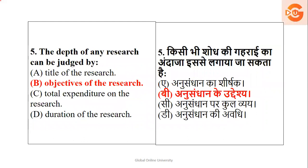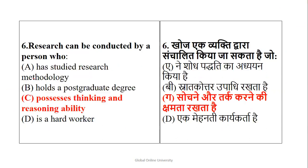Question 5: The depth of any research can be judged by — title, objectives, expenditure, or duration? Definitely not by expenditure or duration. Research depth can be identified by its objectives. So the right option is option B.